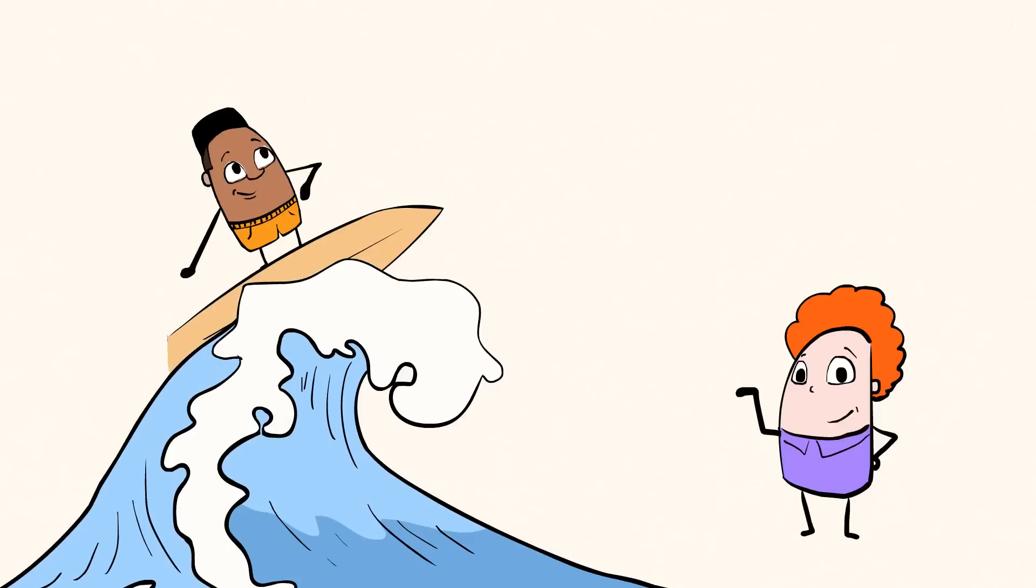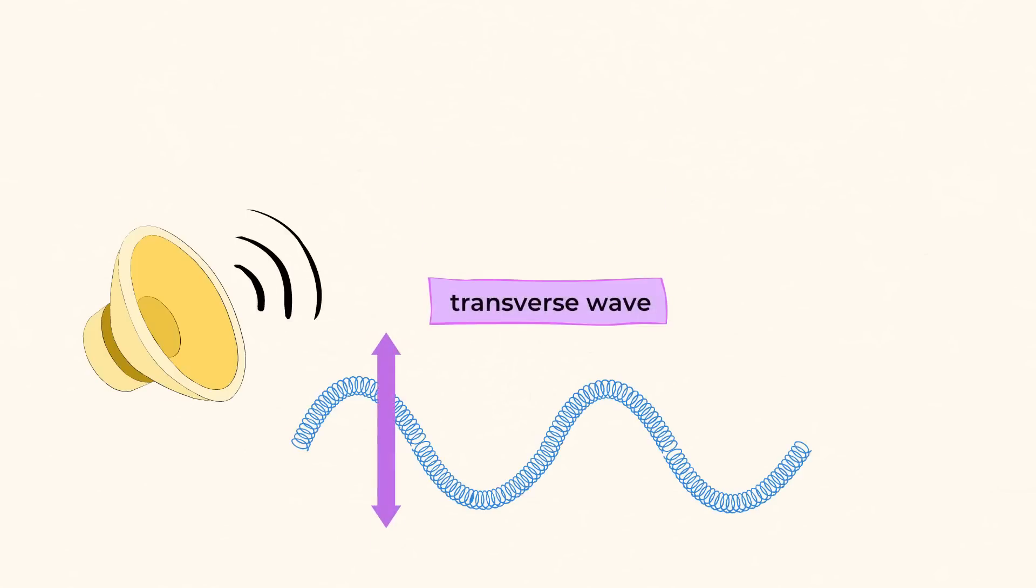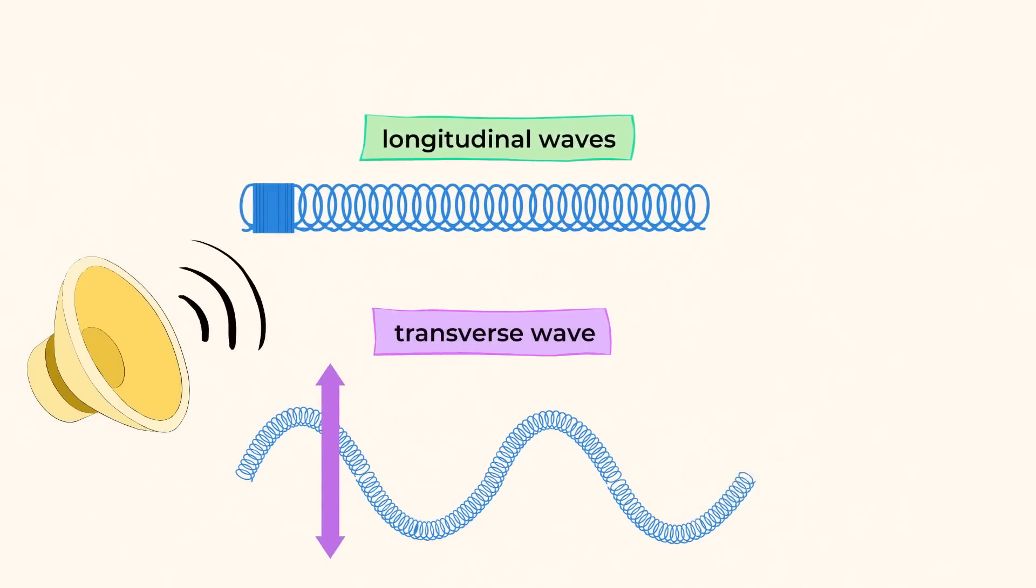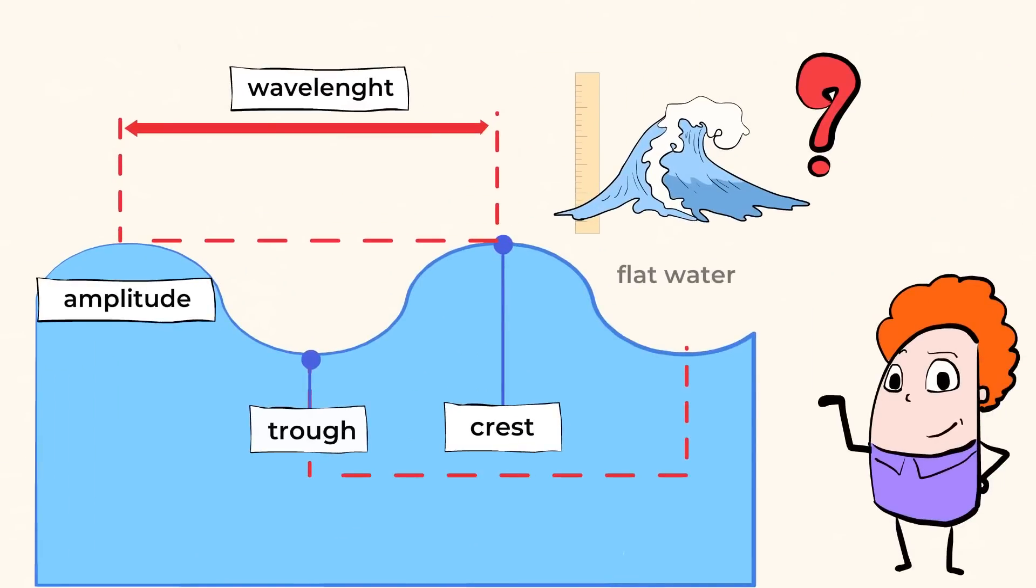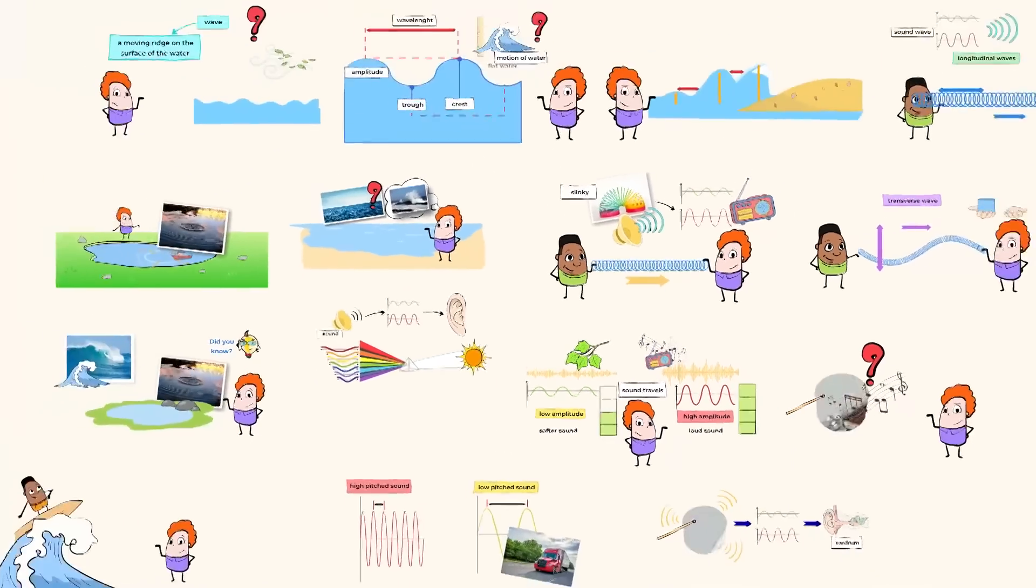As you can see, there's a lot more to waves than just surfing one in the ocean. Though that is a pretty cool thing to do with a wave. There are two types of waves: transverse and longitudinal. We can even measure different parts of the wave, like the wavelength and amplitude. Understanding waves helps us to better understand the motion of water, as well as the way that sound travels. See you in the next video, mighty surfers!